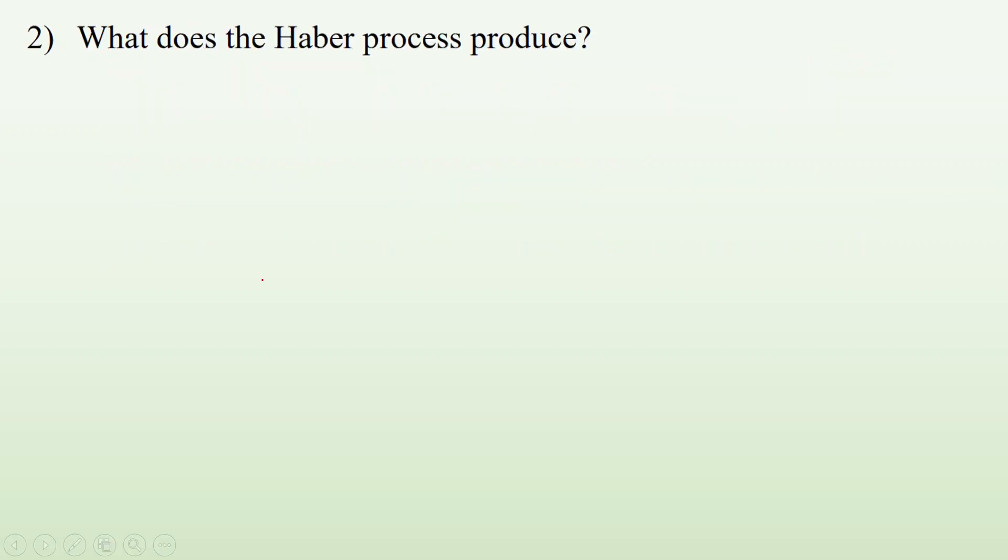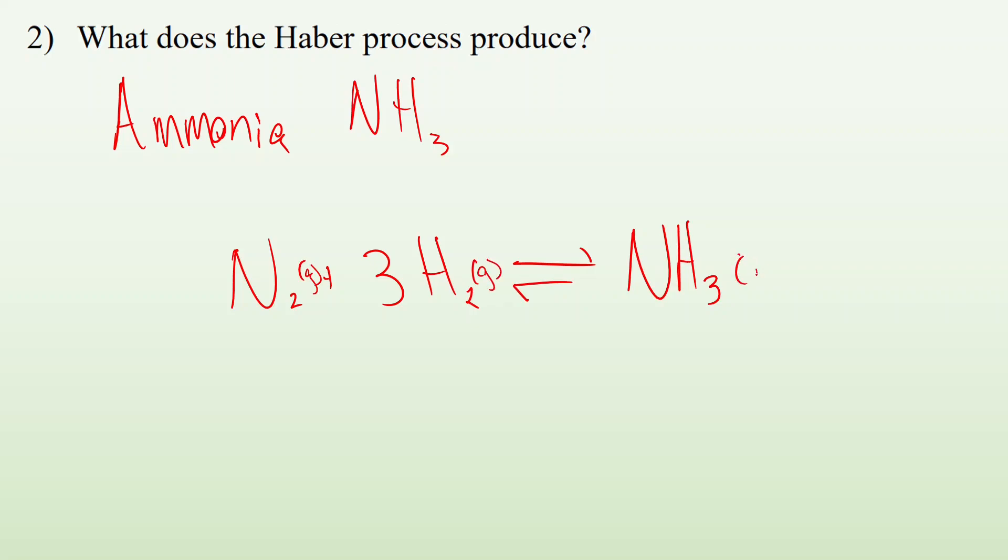Two, what does the Haber process produce? The short answer is ammonia. This is the go-to example equilibrium. It's the N2 reacting with 3H2 giving us NH3, which is an equilibrium with a reverse process, and all of these are gases. If I'm going to be a good chemist, I'm going to include the phases for all those things, too. So that is the Haber process.